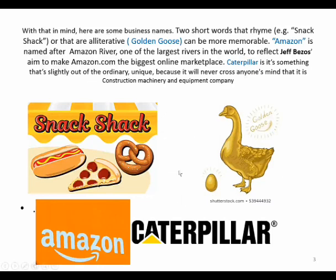If you look at Keller Biller, which is also a very famous company, you find it's very exotic — it's not ordinary, it's unique. No one could ever think that it is a construction machinery and equipment company. The name itself doesn't tell that. So sometimes the name is not necessarily expressive of what a company or business does.